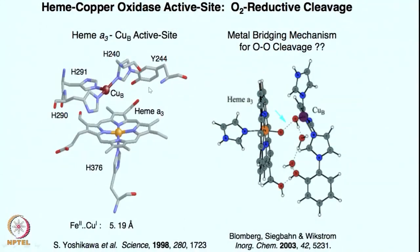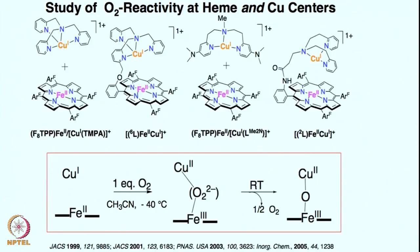We started seeing how synthetic chemists have approached this problem. As in the enzyme, one heme and one copper center are placed perfectly. Synthetic chemists try to do that by various ways: one is a 1-to-1 mixture of iron and copper complex, another is tethering with a tetradentate ligand, a tridentate ligand and the porphyrin center, or a porphyrin center attached with a tridentate ligand.